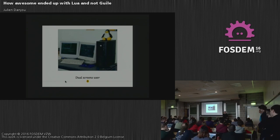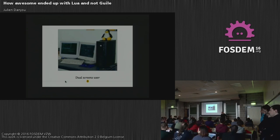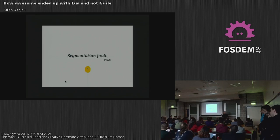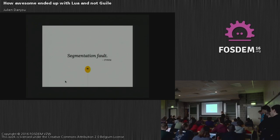I never really understood where you're supposed to configure it, but I was copy-pasting configuration files from other people. And one day, because I switched my desktop from a 32-bit system to AMD64, FBWM was bugged on that. So I had to switch to another window manager.